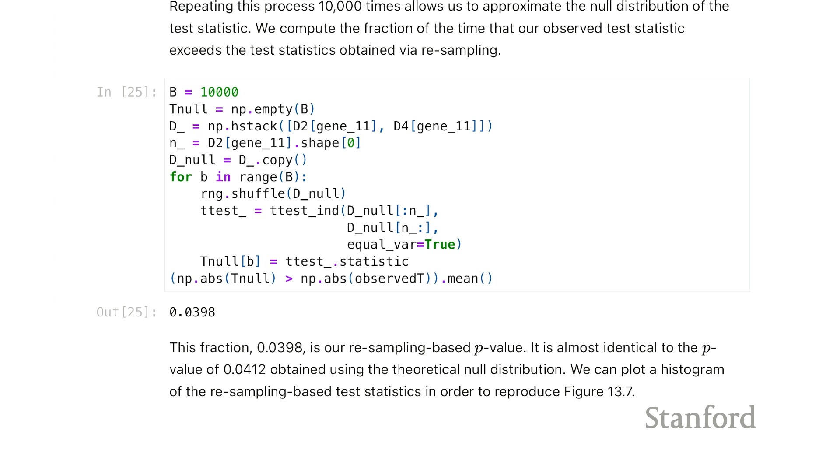And by doing this many, many different times, we get some idea of assuming there's no difference between group two and group four, what are reasonable values for this t-statistic to look like? So we're going to do this 10,000 times here.